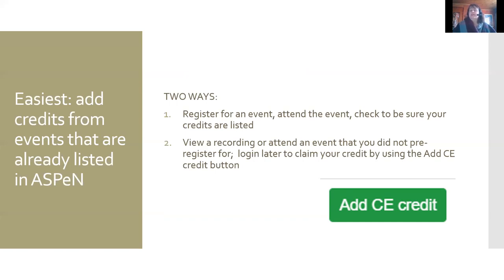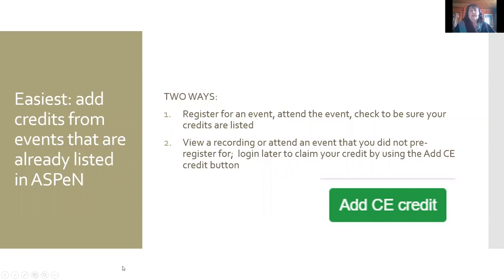The other easiest way is to review a recording or attend an event you didn't pre-register for, then log in later and claim credit using the green Add CE Credit button. If you scroll down on our events calendar, any credit-bearing event you haven't claimed will have that button next to it. Just click it, wait a few seconds for Aspen to process — be patient, click once — then check your credits are listed correctly. We've noticed duplicate credits appearing, likely from double-clicking. If you have trouble, contact me or any State Library staff.